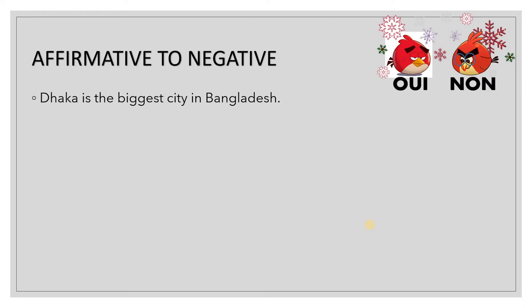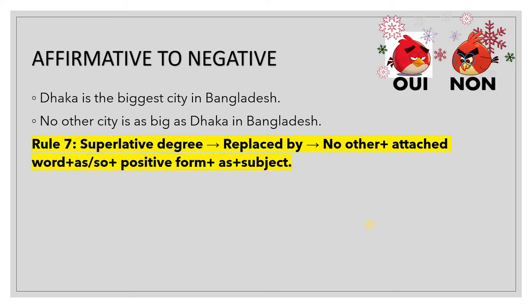Again, affirmative to negative: 'Dhaka is the biggest city in Bangladesh' becomes 'No other city is as big as Dhaka in Bangladesh.' When a superlative degree is used — for example, 'biggest' — we say 'no other' plus the common noun plus 'as' or 'so,' followed by the positive form of the word. It could be either 'as' or 'so.'